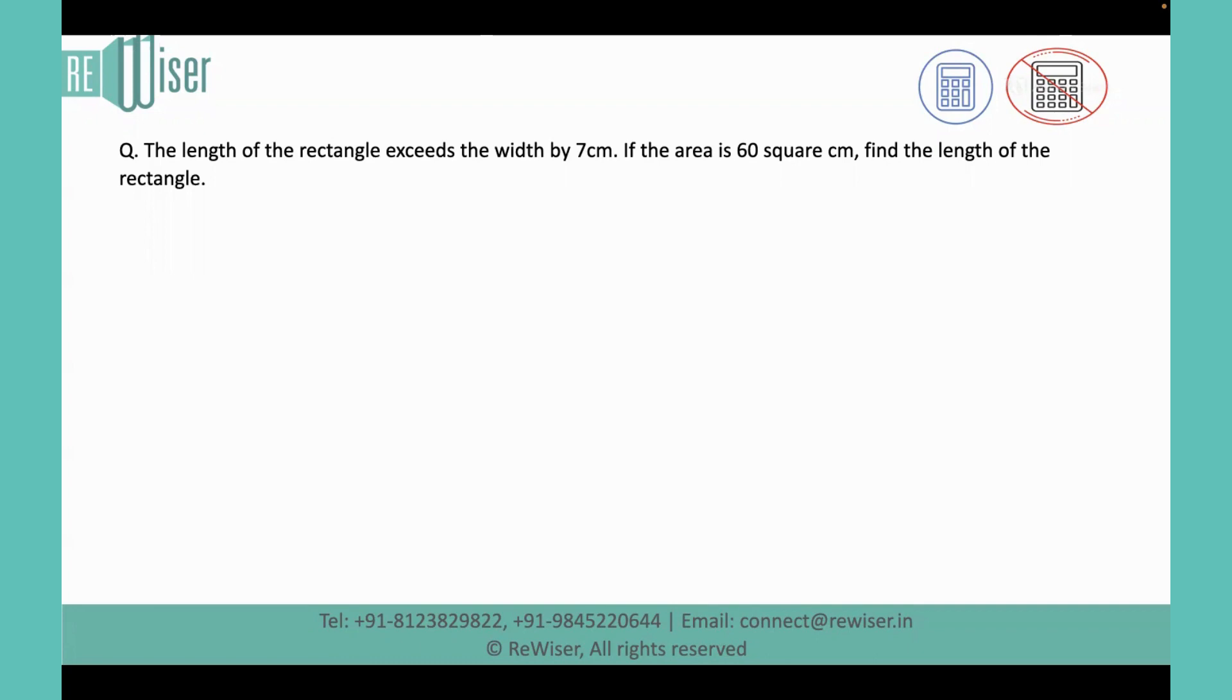The question is given as the length of the rectangle exceeds the width by 7 cm. So from the first information, I'm going to assume that the width of the rectangle is W. And we can say that the length is going to be W plus 7 because the length exceeds the width by 7 cm.